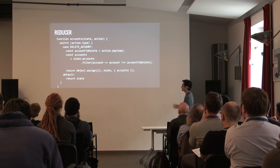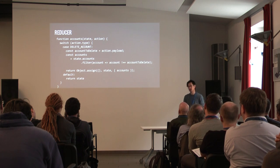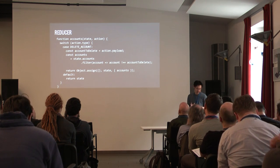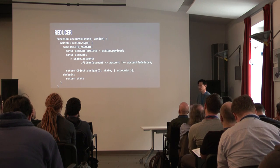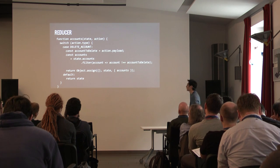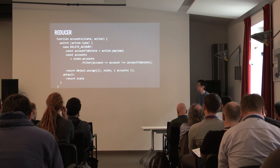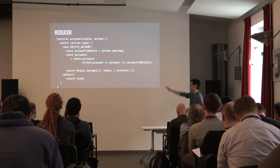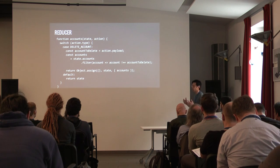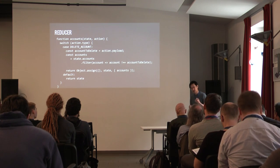The name 'reducer' is intentional — it's a reducing function, the same kind you'd pass to a fold. Given the current state and a new action, it returns the new state. It's implemented as a switch statement: for DELETE_ACCOUNT, take the existing accounts array, filter it to return a new array without the deleted account, and return a new state object. Importantly, we haven't mutated the previous state — returning a new copy allows for some really cool things.